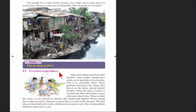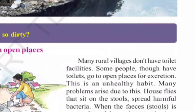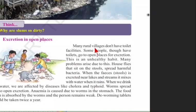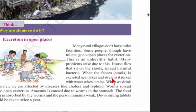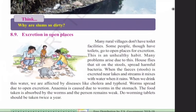Next side heading: Excretion in Open Places. Many rural villages do not have toilet facilities, and some people with toilets still go to open places for excretion — this is an unhealthy habit. Houseflies that sit on stools spread harmful bacteria. When stools are excreted near lakes and streams, it mixes with water when it rains. When we drink this water, we are affected by diseases like cholera and typhoid. Worms also spread due to open excretion.